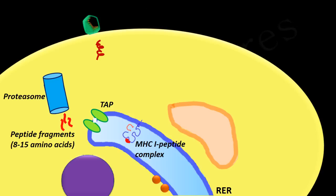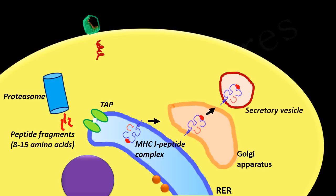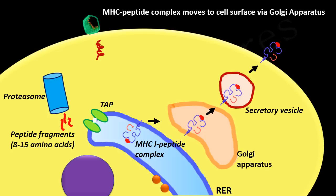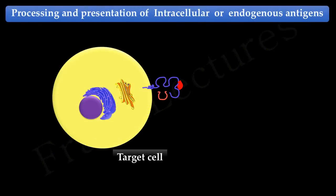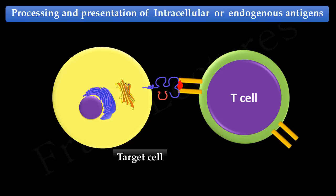The MHC class 1-peptide complex thus formed is released from the chaperones and moves to the cell surface via the Golgi apparatus. Once it reaches the cell surface, it integrates into the membrane and can be recognized by T cells. For recognition, T cells possess T cell receptors which recognize the peptides presented by MHC molecules. T cells also have the coreceptor CD8, which recognizes the alpha-3 domain of the MHC class 1 molecule.